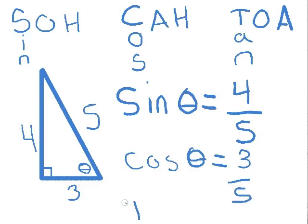And finally tangent, if I can squeeze it in here at the bottom of the screen. Tangent of theta is TOA, opposite over adjacent. So opposite of theta is 4, adjacent is 3, tangent is 4 over 3.